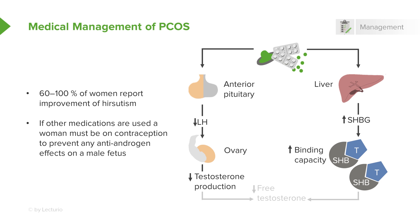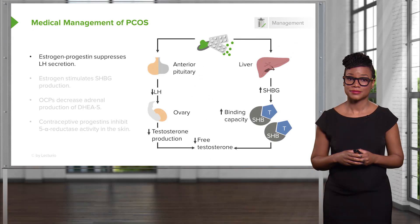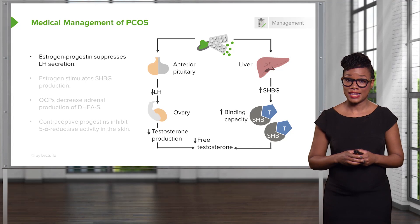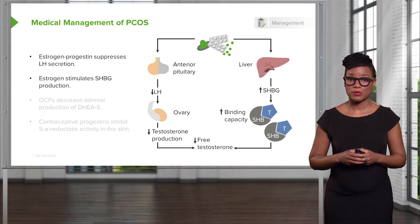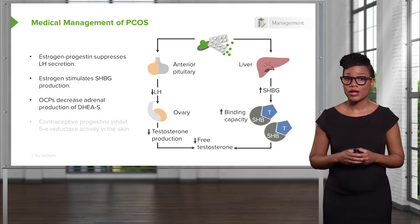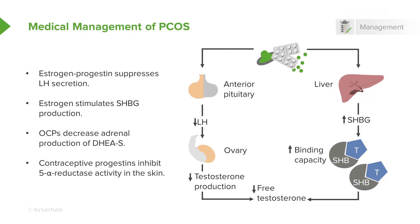If there's decreased testosterone, there's less free testosterone. Also, the estrogen in the pill increases sex hormone binding globulin, which binds more free testosterone. In addition to suppressing LH secretion, estrogen stimulates sex hormone binding globulin production. Oral contraceptive pills also decrease adrenal production of DHEAS, and progestins in contraceptives actually inhibit 5-alpha-reductase activity in the skin.